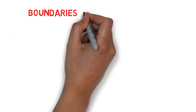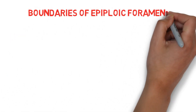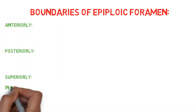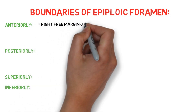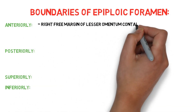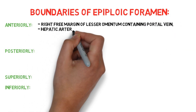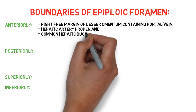The epiploic foramen is bounded in four different ways: anteriorly, posteriorly, superiorly, and inferiorly. Anteriorly, it is bounded by three structures: the right free margin of the lesser omentum containing the portal vein, hepatic artery proper, and common hepatic duct.